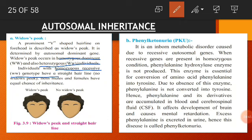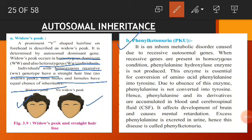Both males and females have an equal chance of inheritance for this trait. Now, the next example is autosomal recessive trait — phenylketonuria, that is PKU. PKU is an inborn metabolic disorder caused by recessive autosomal genes.